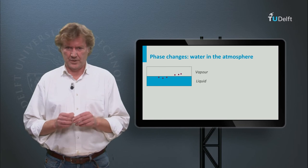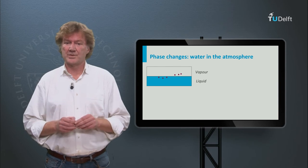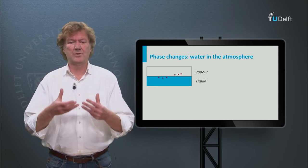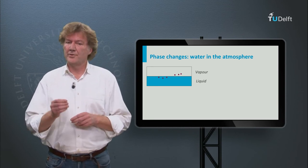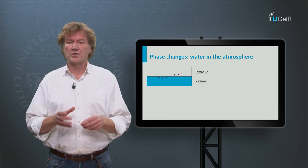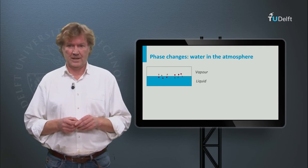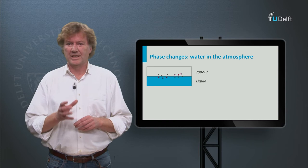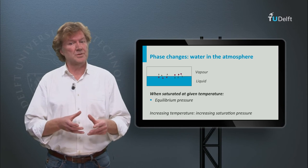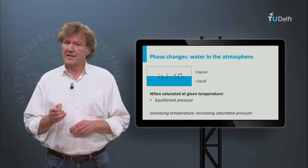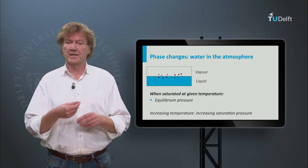Let's consider liquid water. The molecules in the liquid have some kinetic energy. When that is large enough, molecules at the surface can break free from the neighboring molecules and enter into the free space above the surface — some vapor is formed. Also the reverse process is possible: water vapor molecules close to the surface can enter the liquid and be bound there. It is a two-way process. When a balance is reached between the inflow and outflow of molecules, we speak of saturation. The corresponding pressure of water vapor is called saturation pressure. Since the kinetic energy of molecules increases with temperature, also the water vapor saturation pressure increases with temperature.